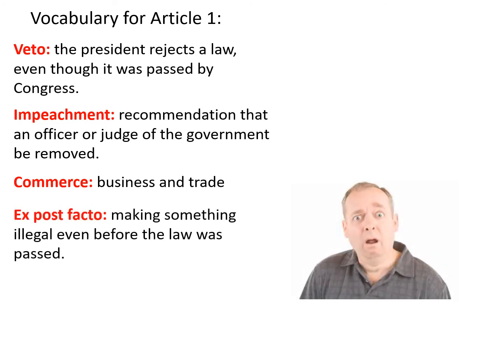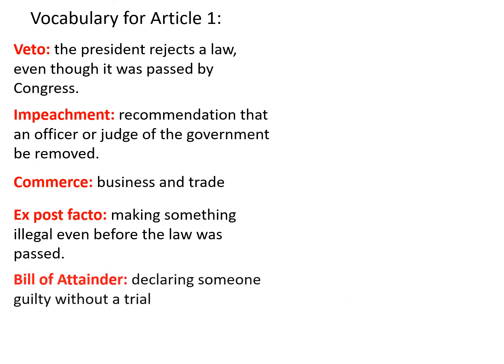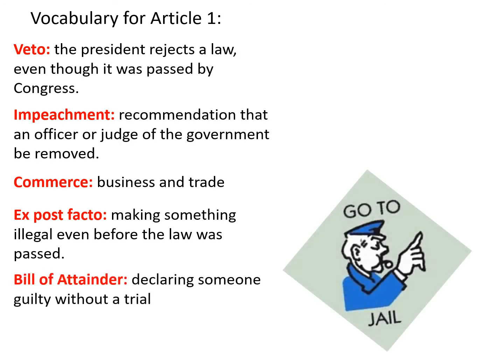Ex post facto is making something illegal even before the law was passed. And a bill of attainder is declaring somebody guilty without a trial — this is when Congress tries to act as though it were a court.